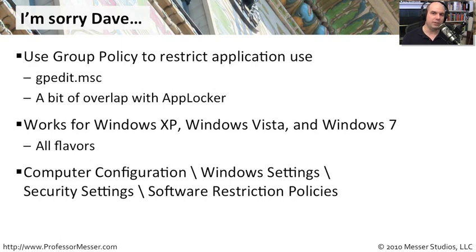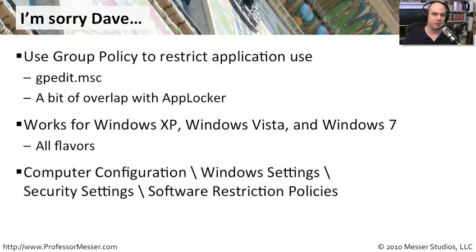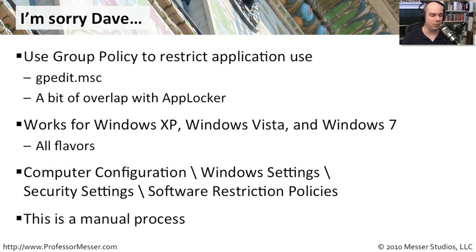We're going to go to the settings in your local security policy or your group policy editor under Computer Configuration > Windows Settings > Security Settings > Software Restriction Policies, and we'll step through those so you can see exactly how that works.